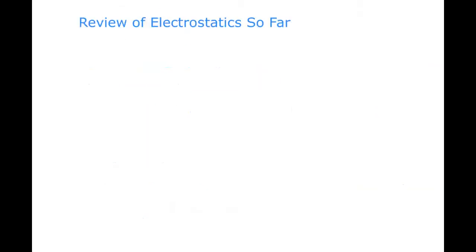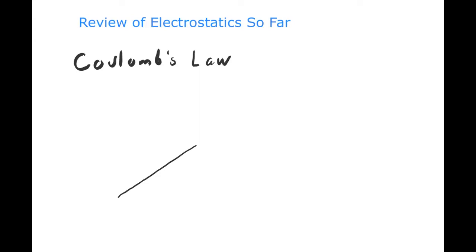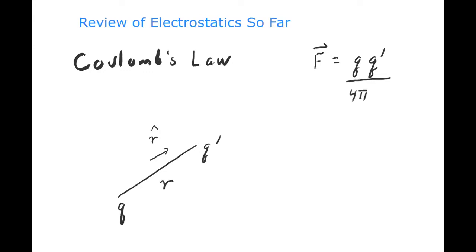We're going to start with a review of what we've done with the problem of electrostatics so far. The fundamental observation of electrostatics is Coulomb's law, which says suppose you have two point charges, q and q prime, separated in space by some distance r. We define a unit vector r-hat accordingly. Coulomb's law says there's a vector force between those two point charges. That vector force is radial, depends on the square of the magnitude of the two charges, q and q prime, and it's an inverse square law.